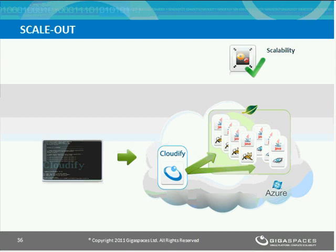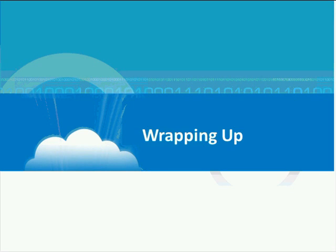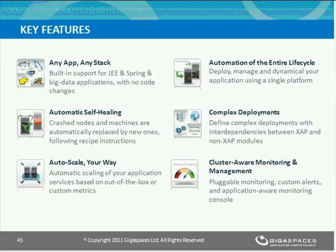That wraps up the demonstration part. Let's summarize what we've gone through. The six prime features you can expect are: use your existing application stack with no code changes; keep your application up and running; adjust your application to any cloud; automate complex lifecycle events such as install, uninstall, deploy, undeploy, start, stop, and any custom events; deploy and manage the entire application — not just separate tiers; and get full control and visibility over the constantly changing application in dynamic cloud environments.